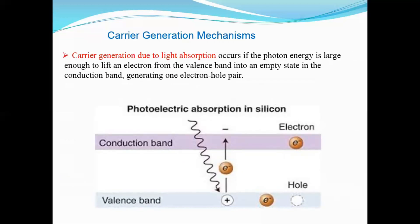Under Carrier Generation Mechanisms, we will study three mechanisms. The first is carrier generation due to light absorption. In this process, the photon energy is absorbed by an electron present in the valence band. As seen in the diagram, the photon is incident and the electron absorbs this energy, being lifted from the valence band to the conduction band, leaving behind a hole in the valence band. Corresponding to one electron in the conduction band, there is one hole in the valence band, creating one electron-hole pair.